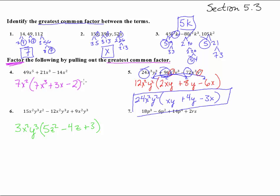Number 7: 18p³ minus 6p² plus 14p⁴ plus 2rs. The p's appear in three terms but not the last one, so we can't factor out p. Looking at the numbers: 18 is 9 times 2, 6 is 2 times 3, 14 is 2 times 7, and 2 is just 2. So 2 is the only common factor we can pull out, giving us 2 times (9p³ minus 3p² plus 7p⁴ plus rs). There's nothing more to factor out, so we're done.